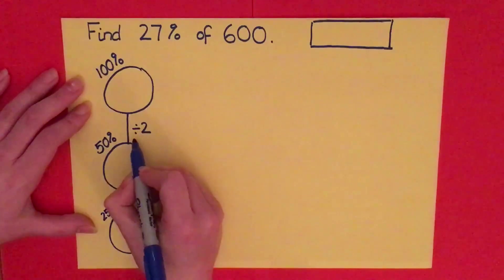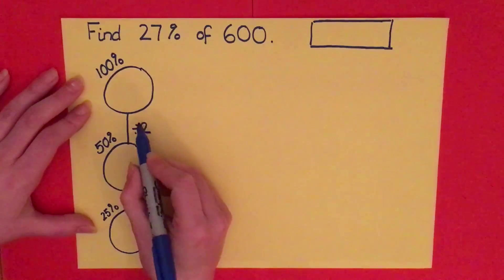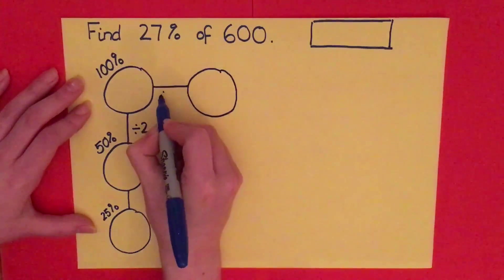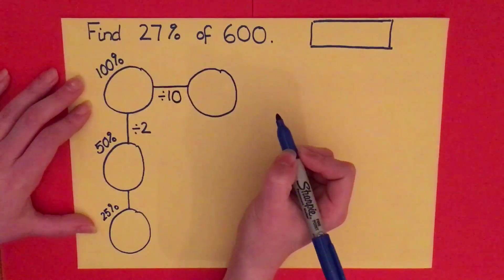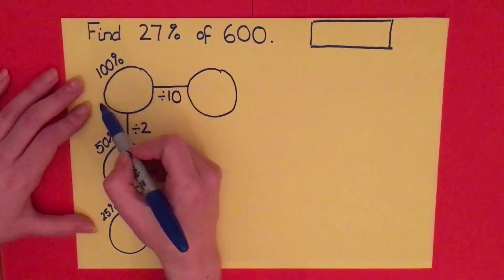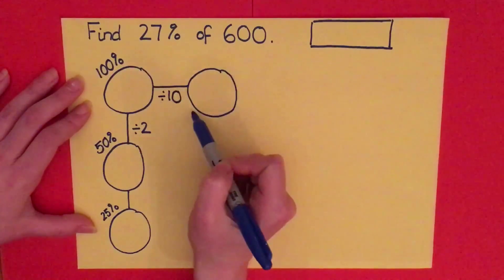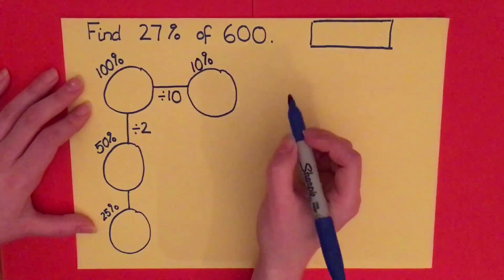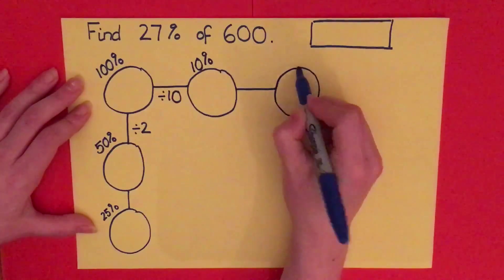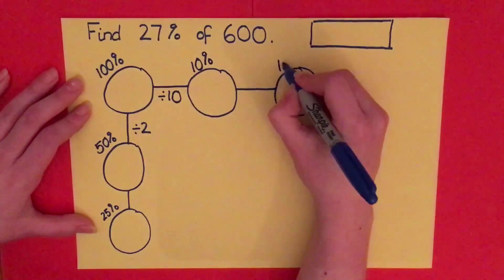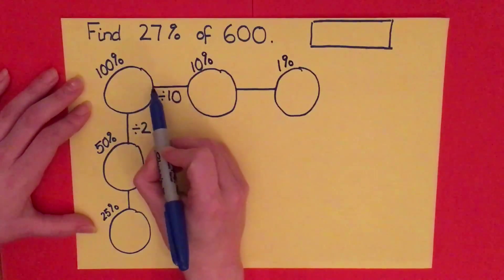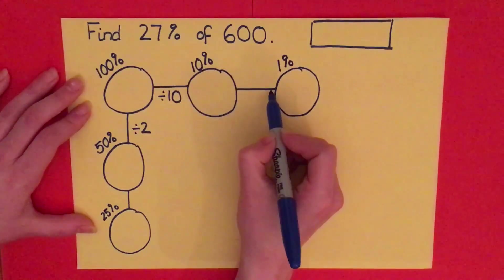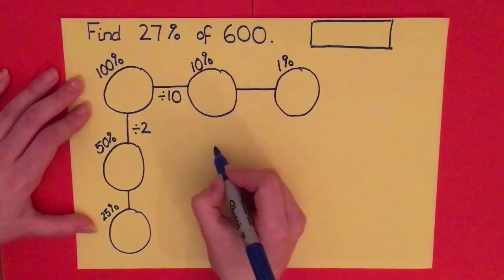If you go down, you divide by two, or you halve. If you go to the right, you divide by 10 and make it 10 times smaller. So starting at 100%, dividing by 10 gives a bubble representing 10%, and dividing by 10 again gives a bubble representing 1%.